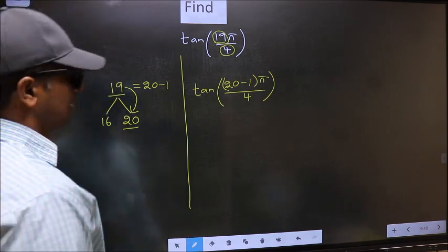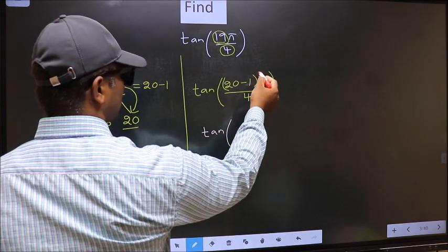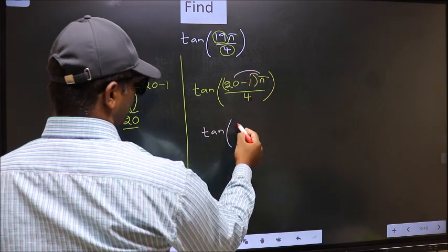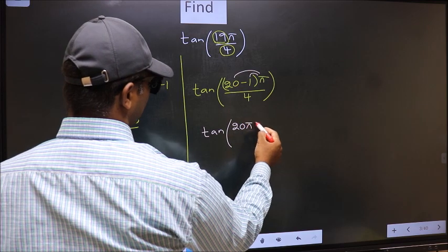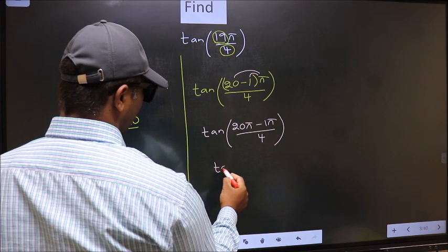Next, tan. Now you should open the brackets. You get 20 pi minus 1 pi by 4.